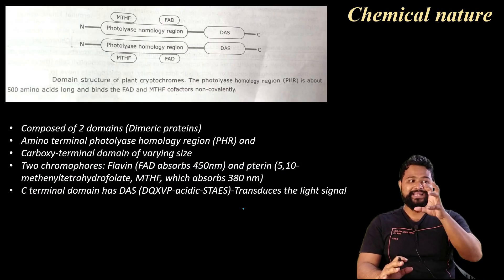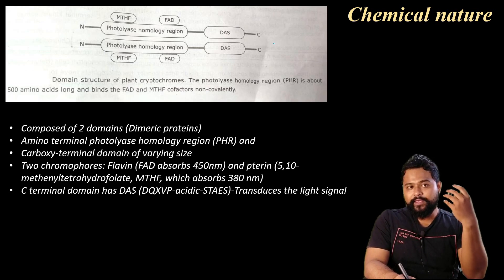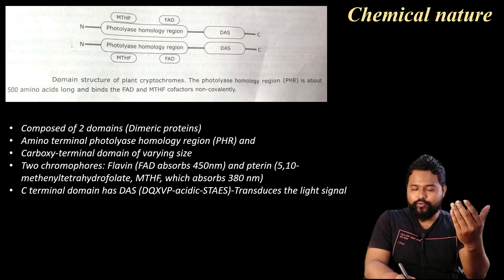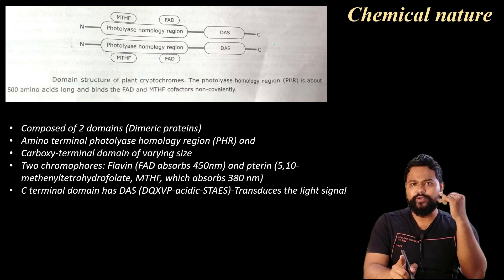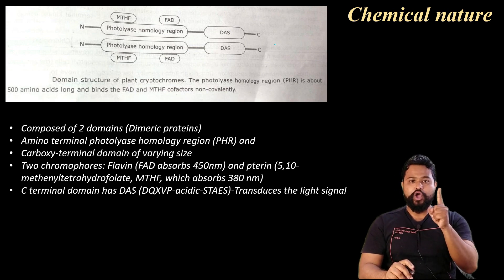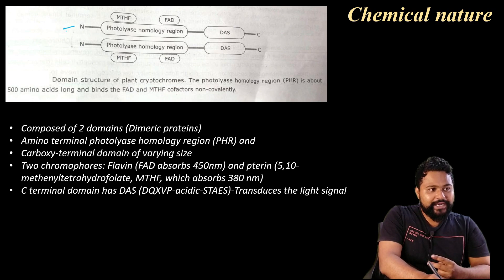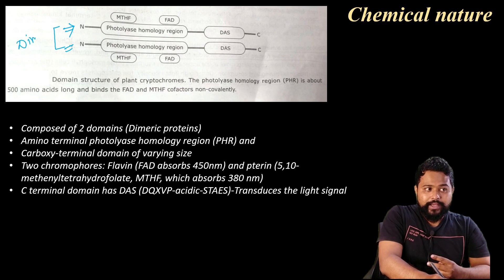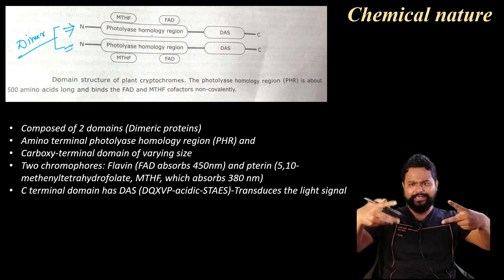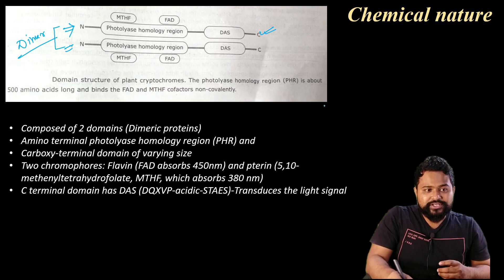Regarding the chemical nature: we have phytochromes, cryptochromes, and phototropins as photosensory pigments. The structure functions as a dimer. This is the monomer and this is the dimer. If we have the structure, it forms a single monomer. The dimer comes from two monomers. This is the structure of the monomer.